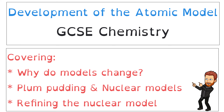Hello and welcome to this GCSE Chemistry video about the development of the atomic model. In this video we'll take a look at what models are and why they change, and then we'll focus in on the two most important models for the atom, which are the plum pudding model and the nuclear model. And then we'll explore some subtle refinements that have taken place for the nuclear model as we get closer to our present-day model of the atom.